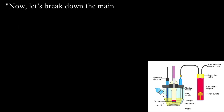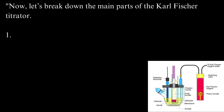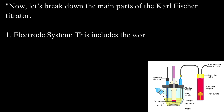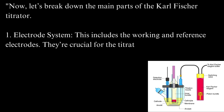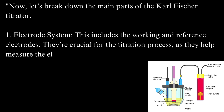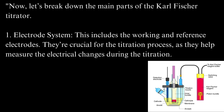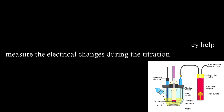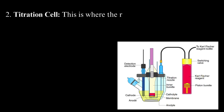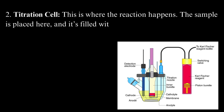Now let's break down the main parts of the Karl Fischer titrator. Electrode system: this includes the working and reference electrodes. They're crucial for the titration process, as they help measure the electrical changes during titration. Titration cell: this is where the reaction happens. The sample is placed here and it's filled with the Karl Fischer reagent.